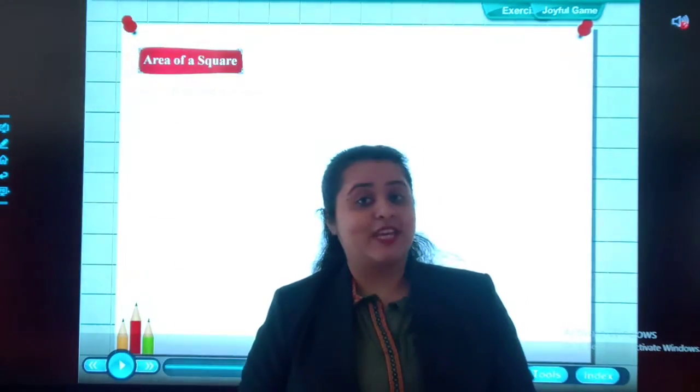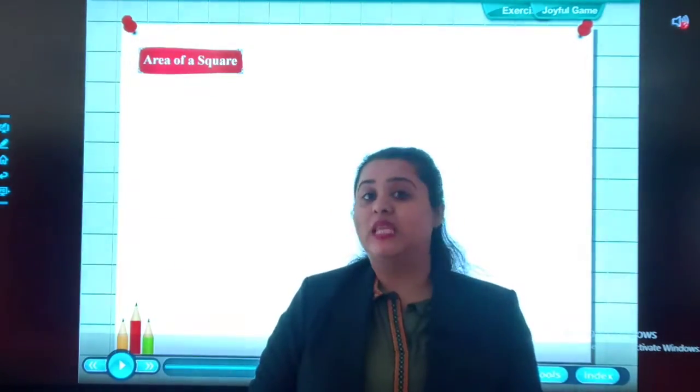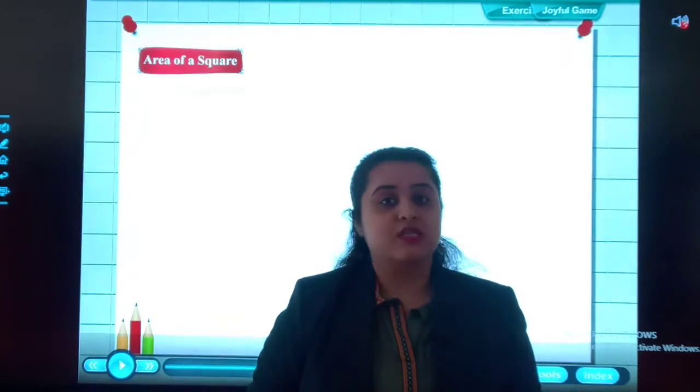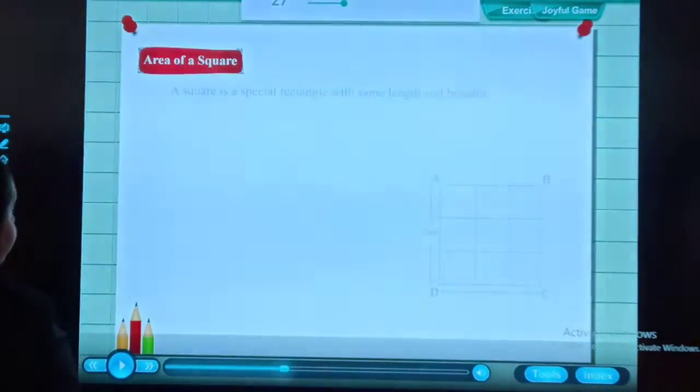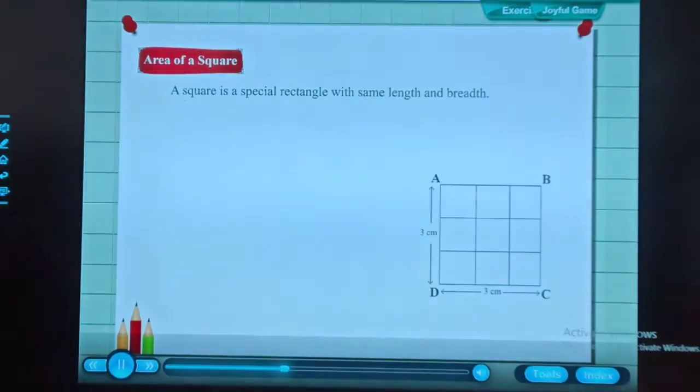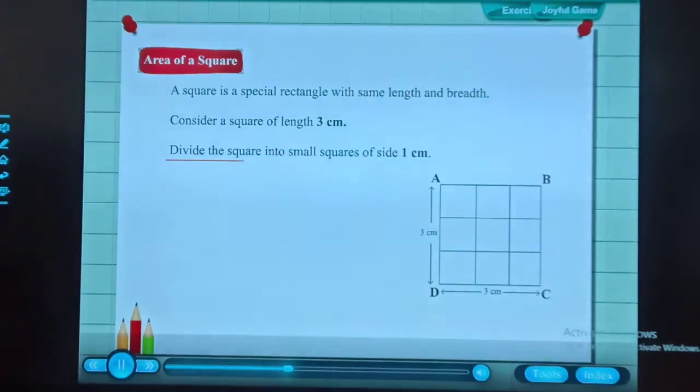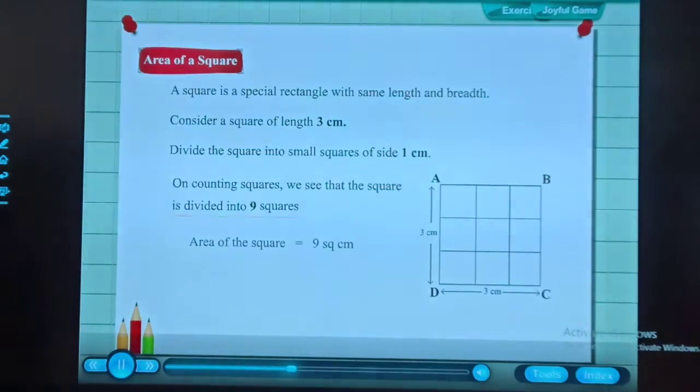So today in this video we will be learning about what is area of a square. For example, the square is a special rectangle. Consider a square of length 3 cm. We can divide the square into small 1 cm squares.